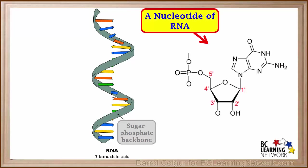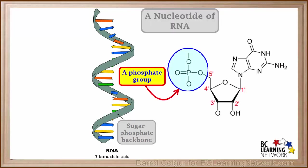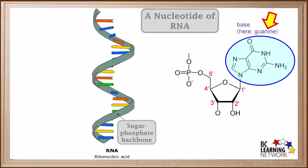Let's take a closer look at a nucleotide of RNA. Like a DNA nucleotide, it has a phosphate group and a base. Four different bases are possible. The one shown here is guanine.